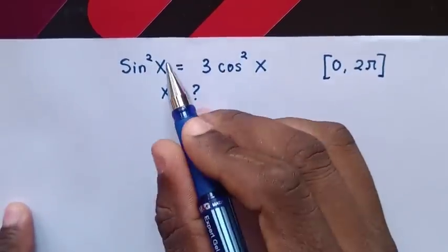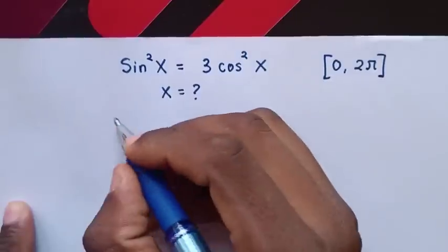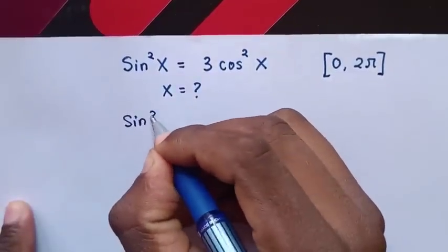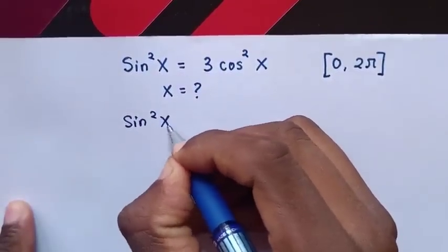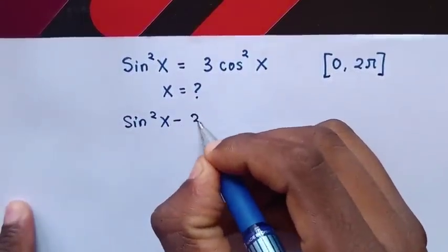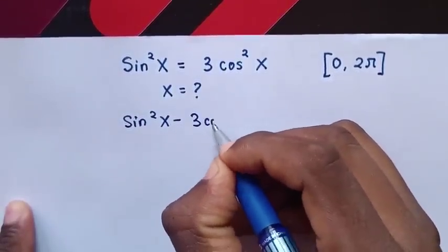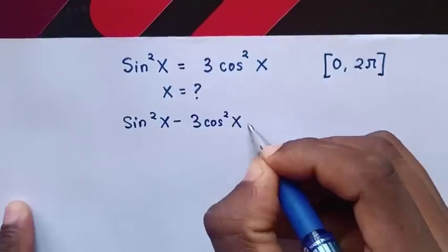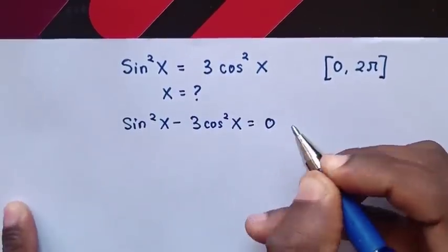First, we take the right side to the left side, so it will be sin squared x minus 3 cos squared x is equal to 0.